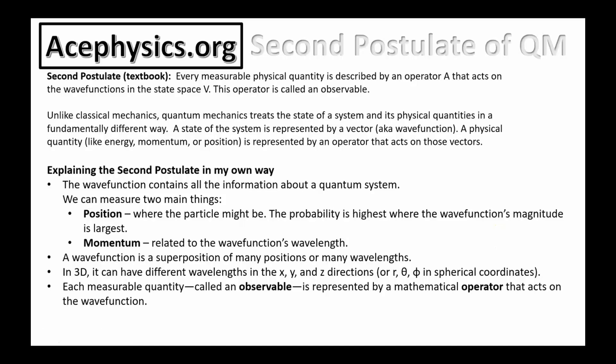On this slide, I will discuss the second postulate of quantum mechanics, and on the next slide, I will show some animations to help you understand it better. Here's the second postulate of quantum mechanics taken from a textbook. Every measurable physical quantity is described by an operator A that acts on the wave function in the state space V. The operator is called an observable. Here's some more information you can read directly from the textbook.